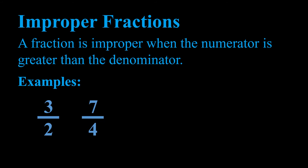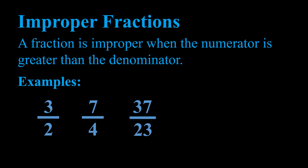Another example is seven quarters, or seven divided by four. Our numerator, seven, is larger than our denominator, four, so this also meets the criteria of an improper fraction. We also have 37 divided by 23 and 75 divided by 52 — both meet the criteria of improper fractions, since the numerator is greater than the denominator in each case.